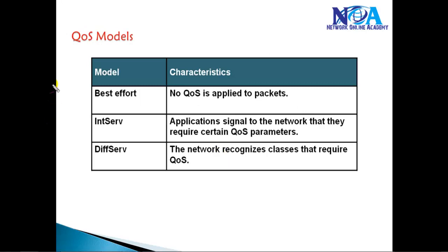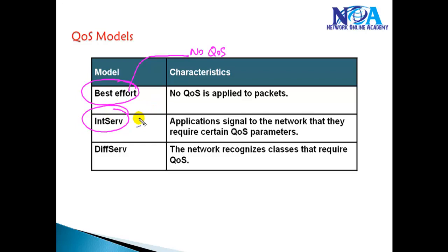To quickly revise: the Best Effort model means no Quality of Service — no differentiation and no priority at all. Integrated Services reserves a specific amount of bandwidth for each and every flow using the RSVP protocol, but it is not really scalable in large networks.